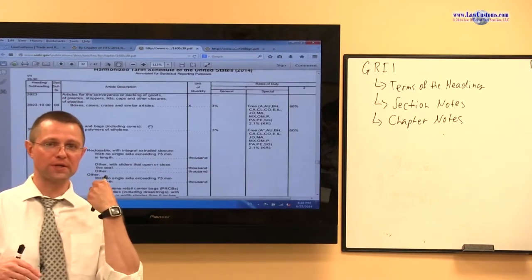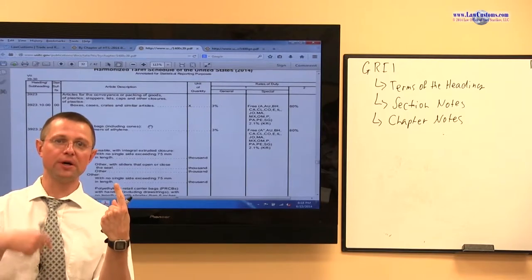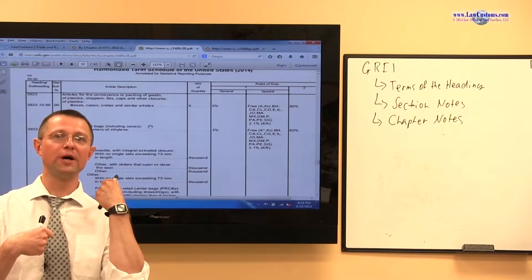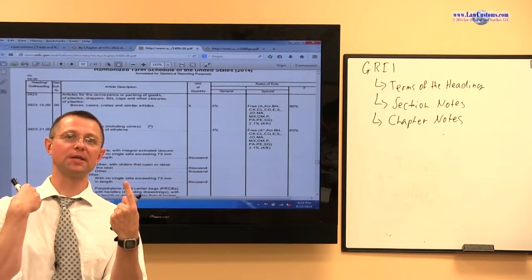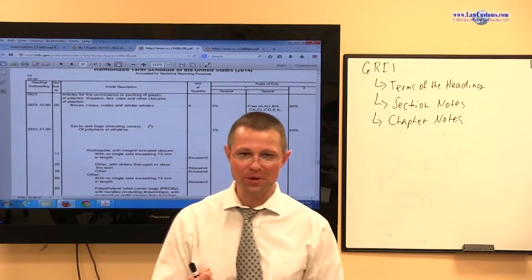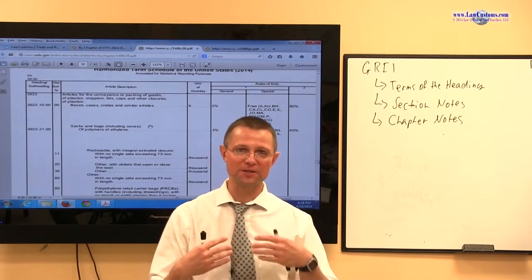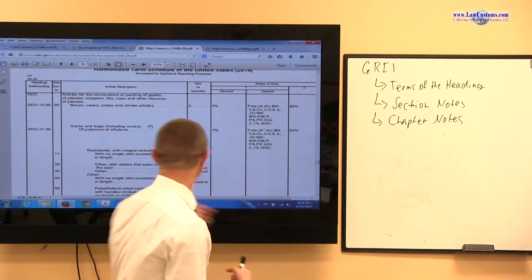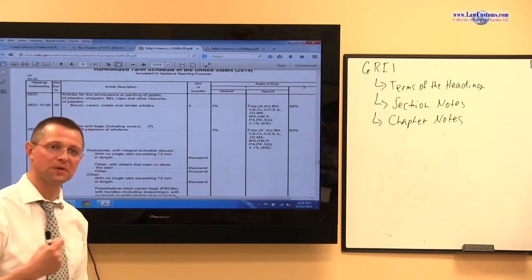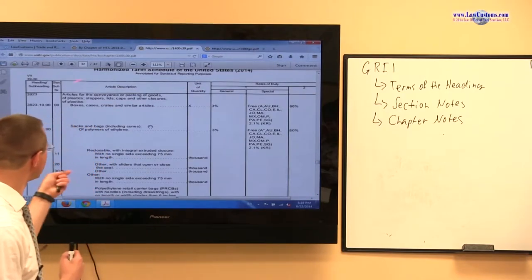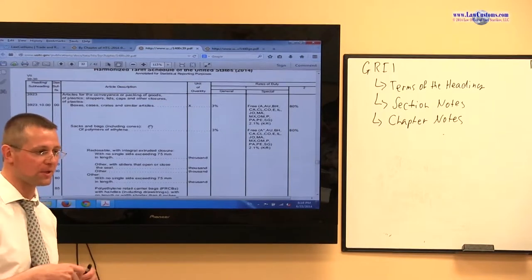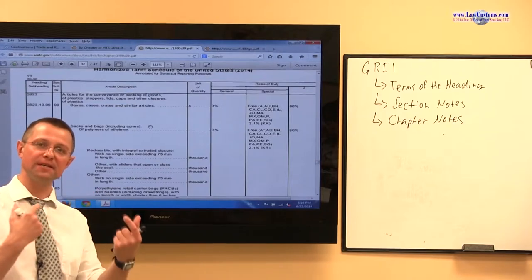So two things. Lids or other closure made out of plastic, number one. Number two, article of convenience of packing of goods and made out of plastic. So what does it mean? It means that now, when we are trying to deconstruct and read the HTS US, we are looking at the set of relevant factors. This type of deconstruction, this type of analysis, even though it is very simple over here, is essential for the proper analysis because we look at the key relevant facts.